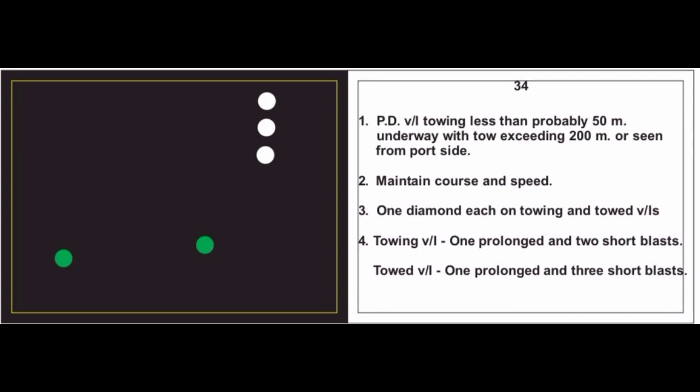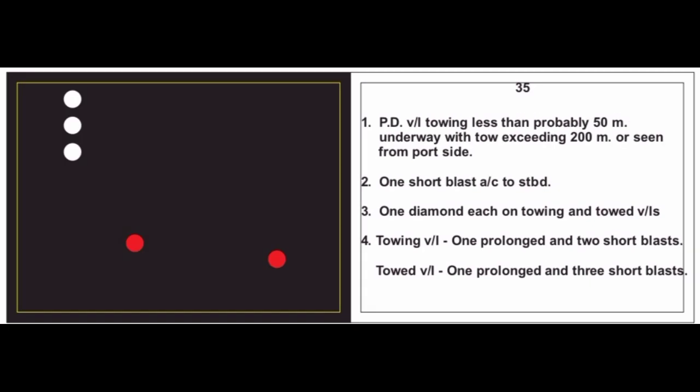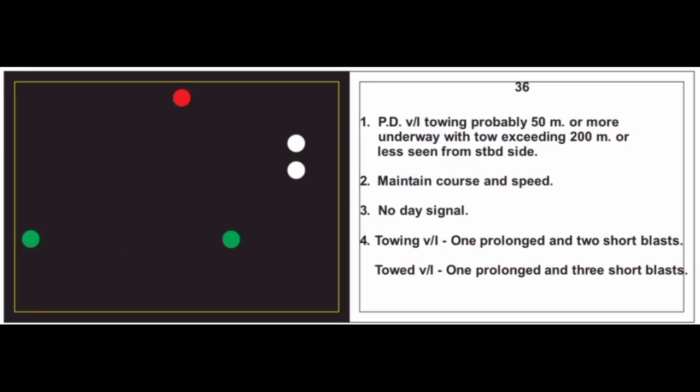Card 34: Three white lights — power driven vessel towing less than 50 meters underway, with tow exceeding 200 meters, seen from starboard side — tow confirmed exceeding 200 meters. Maintain course and speed. Day signal: one diamond each on towing and towed vessel. Sound signal as prescribed. Card 35: Same as 34 but from port side. One short blast, alter course to starboard. Day signal: one diamond each on towing and towed. Towing vessel: one prolonged and two short; towed vessel: one prolonged and three short blasts.